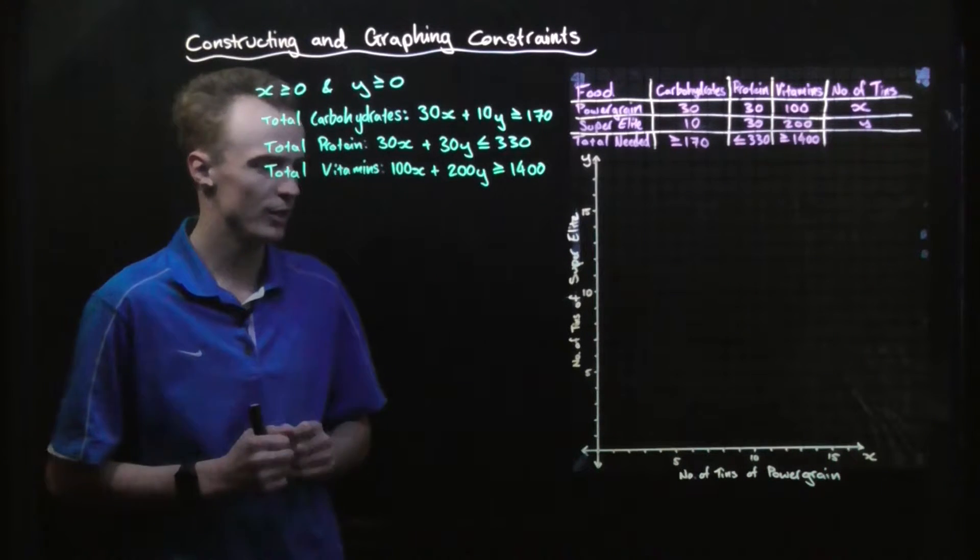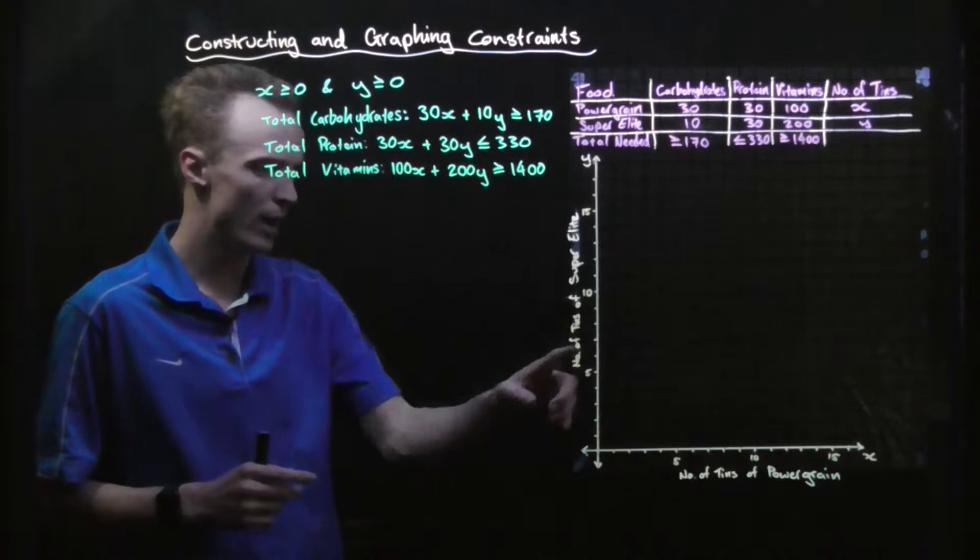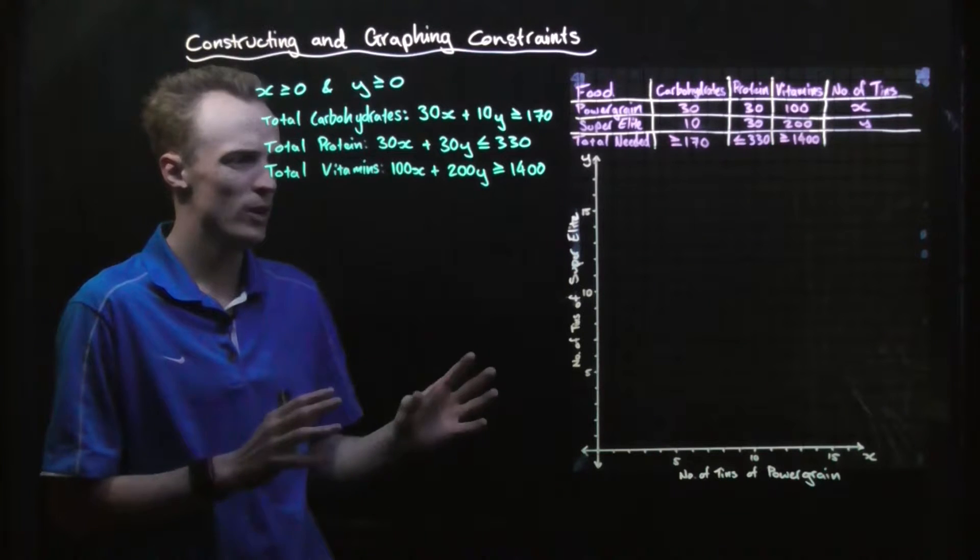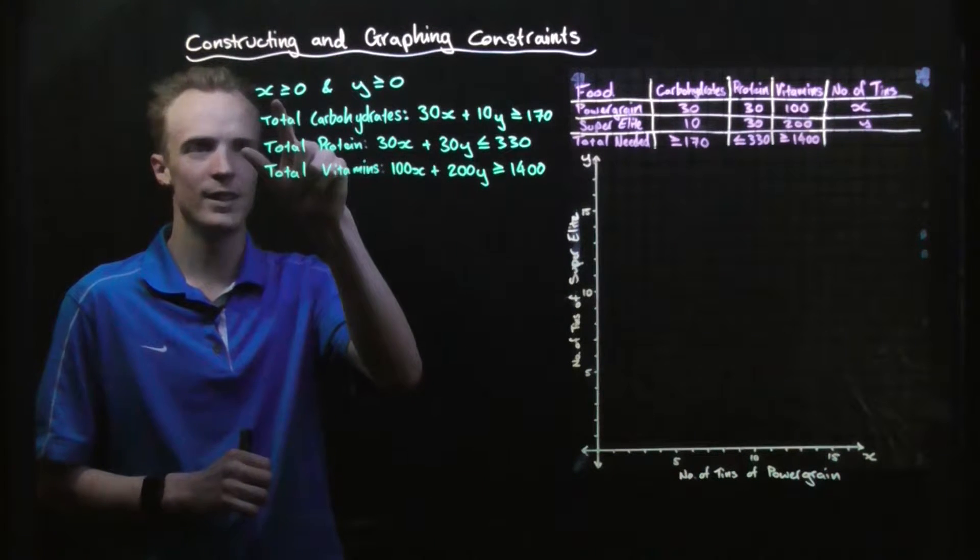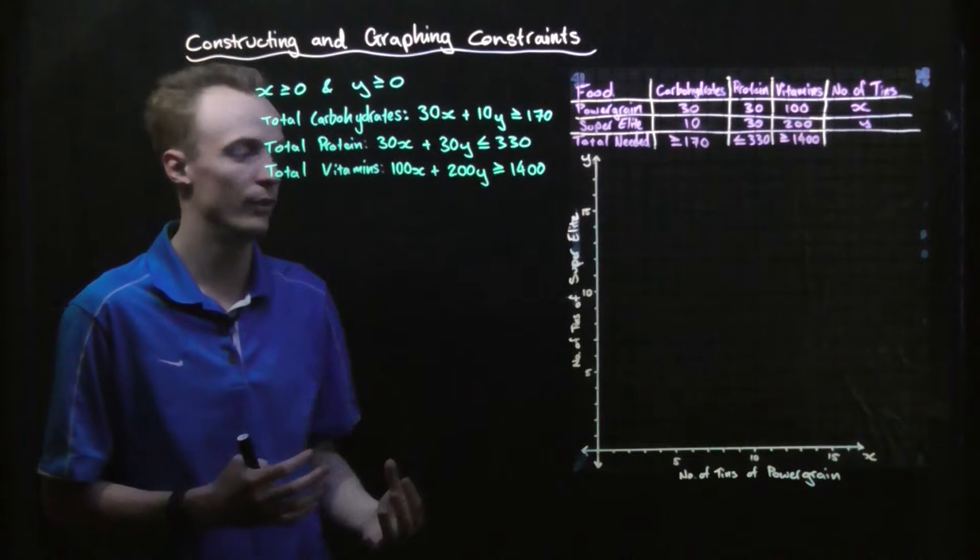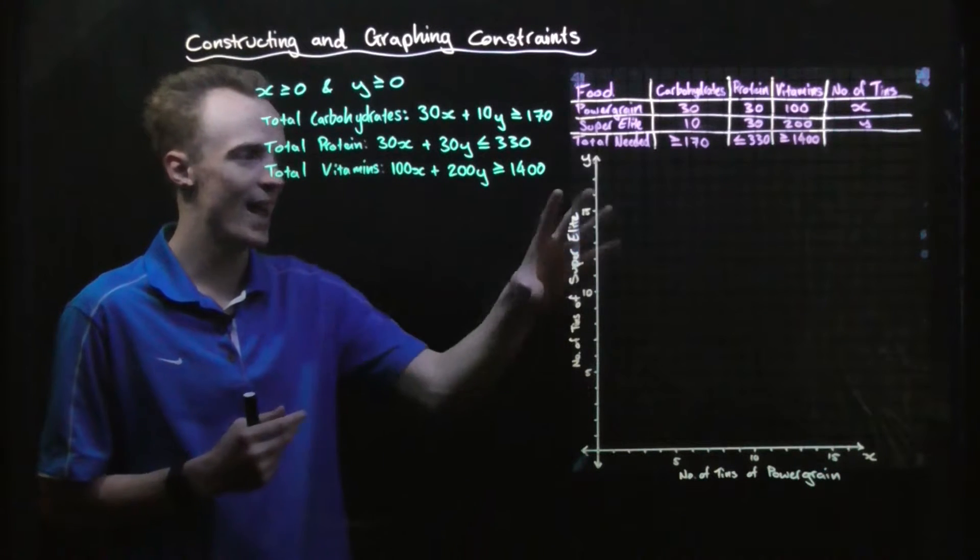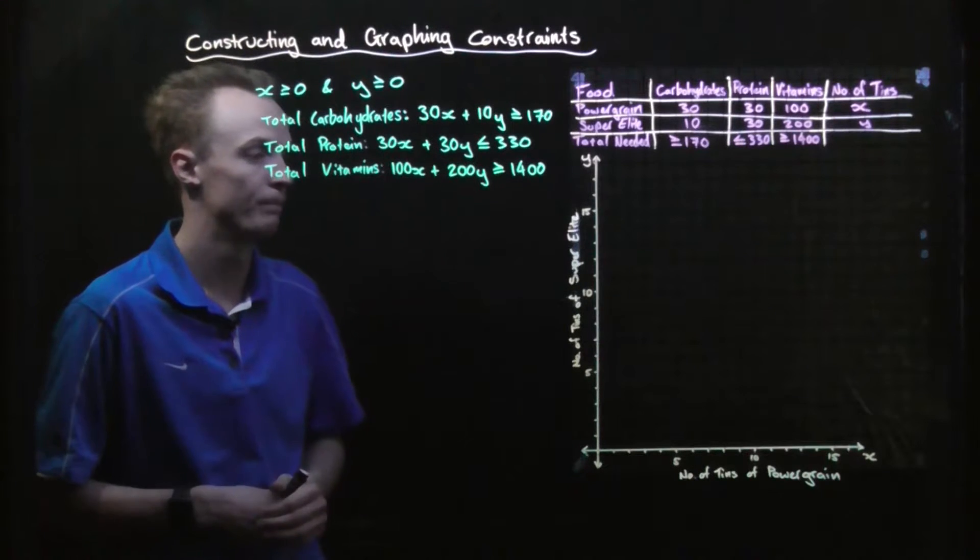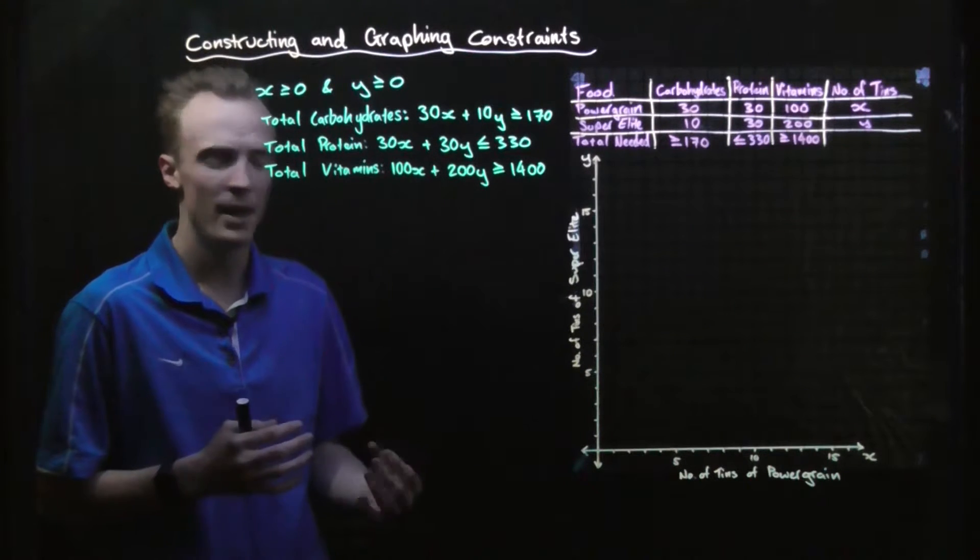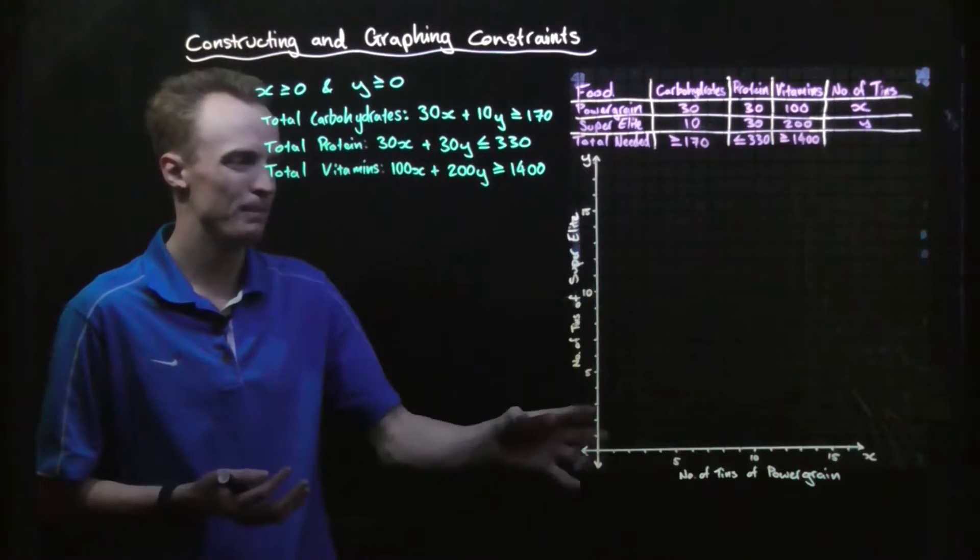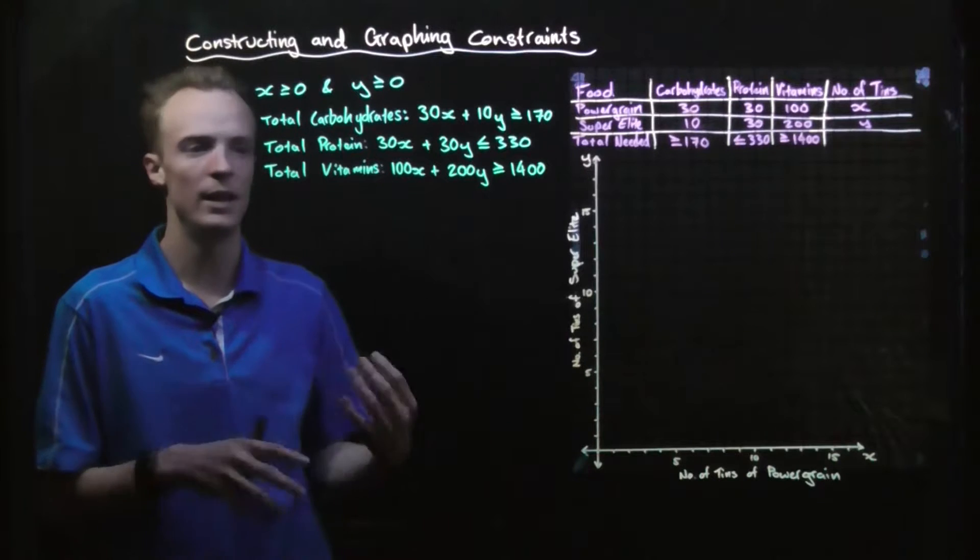Now the first thing you'll notice is I've already graphed the first quadrant section of our graph. The reason is because we've got the constraints that x has to be greater than or equal to zero and y has to be greater than or equal to zero. This tells me it has to be in the first quadrant. If you think about the problem, the number of tens of super elite and power grain have to be positive, so it makes sense.